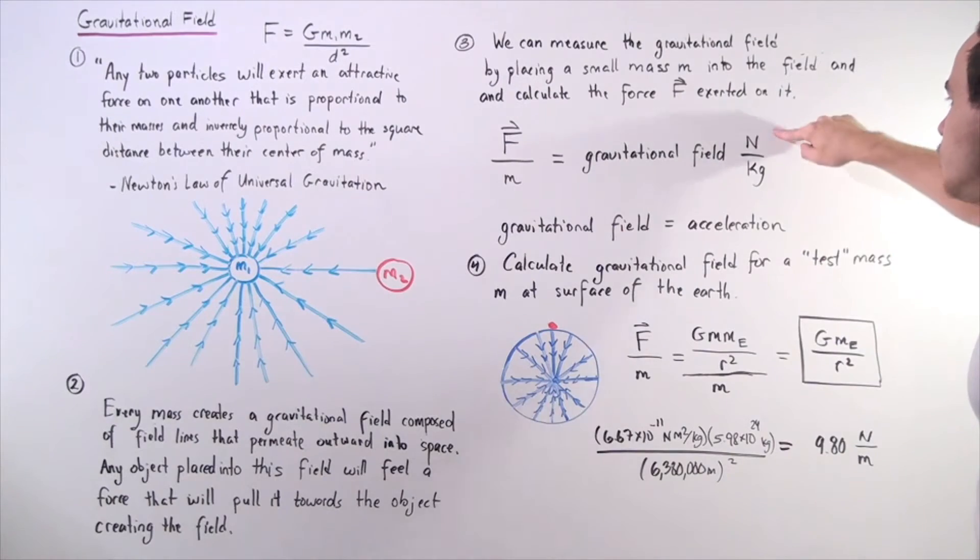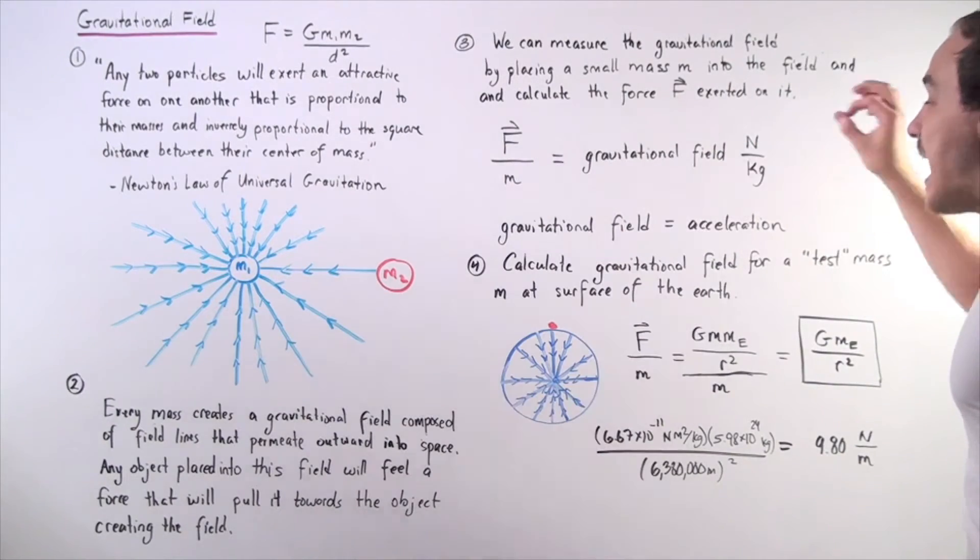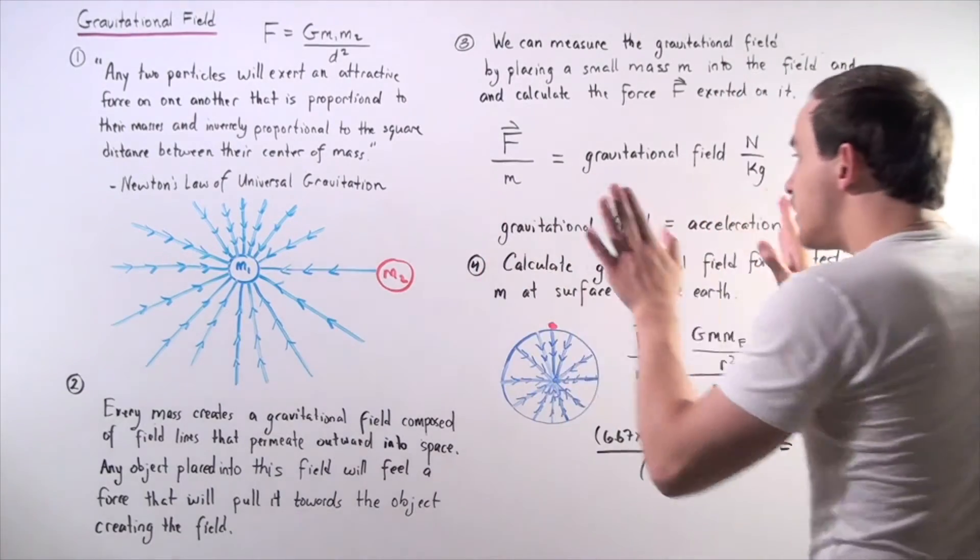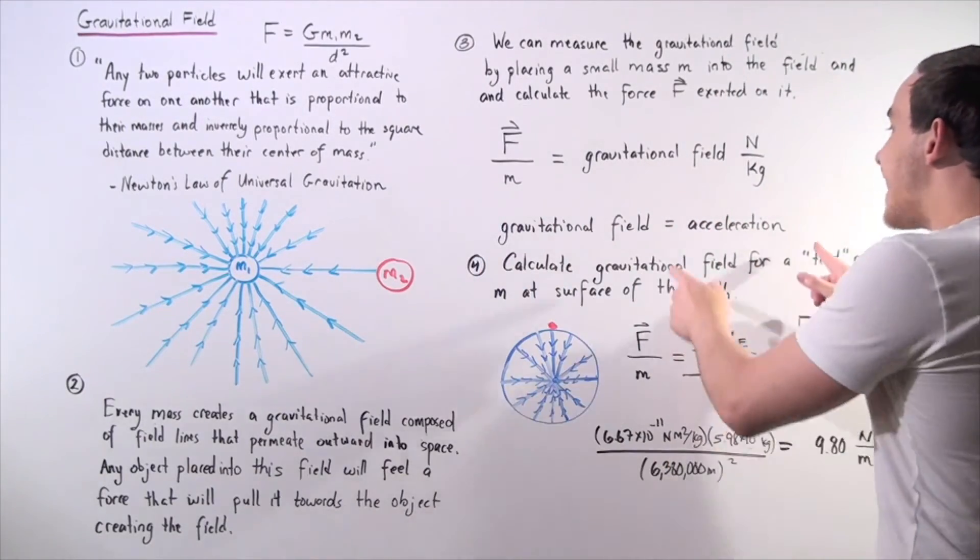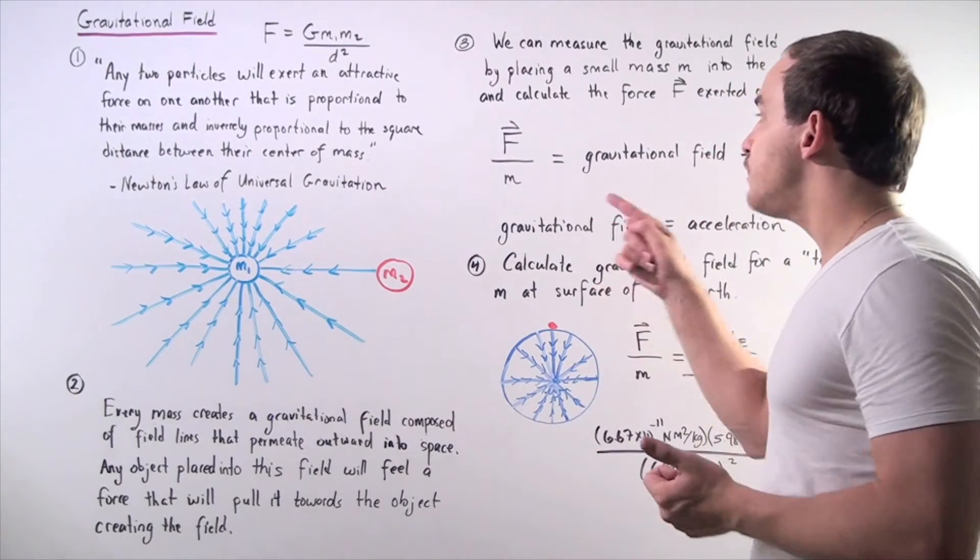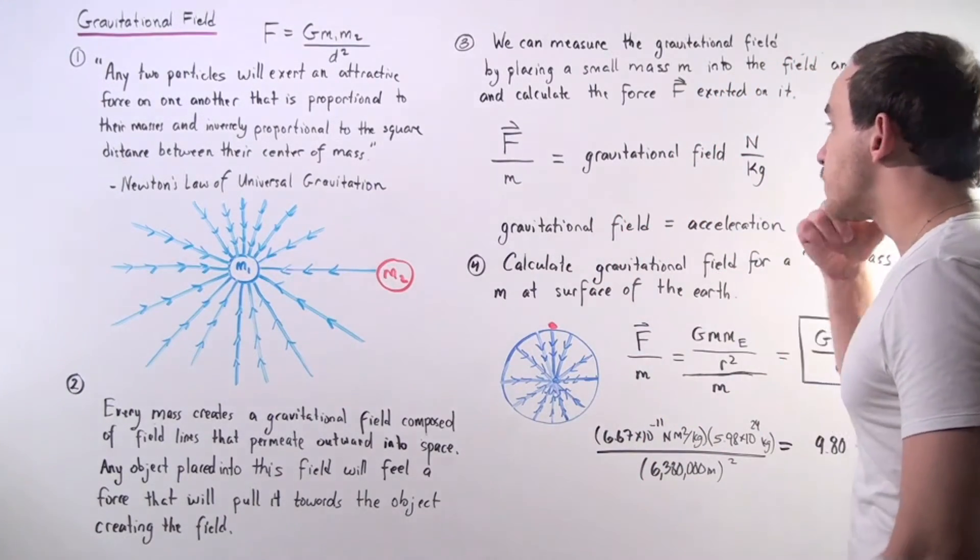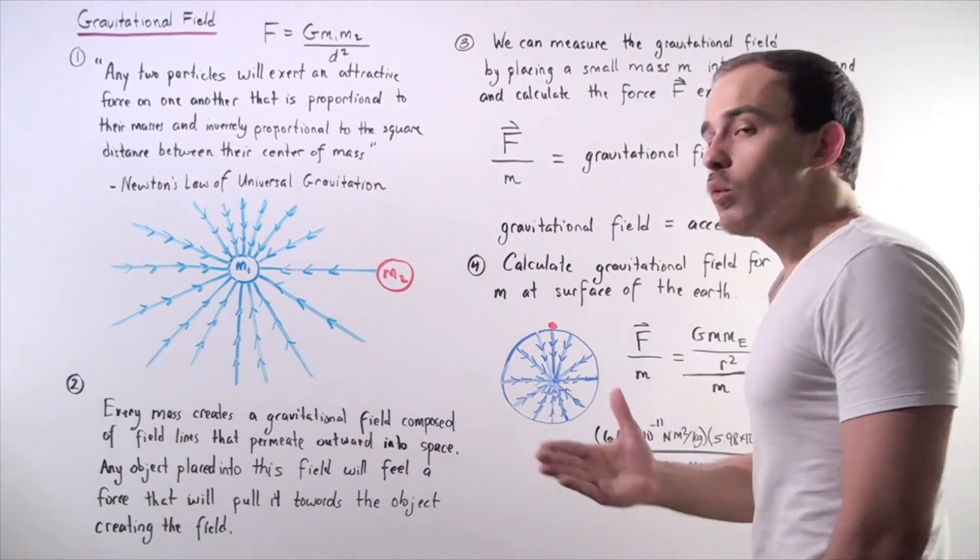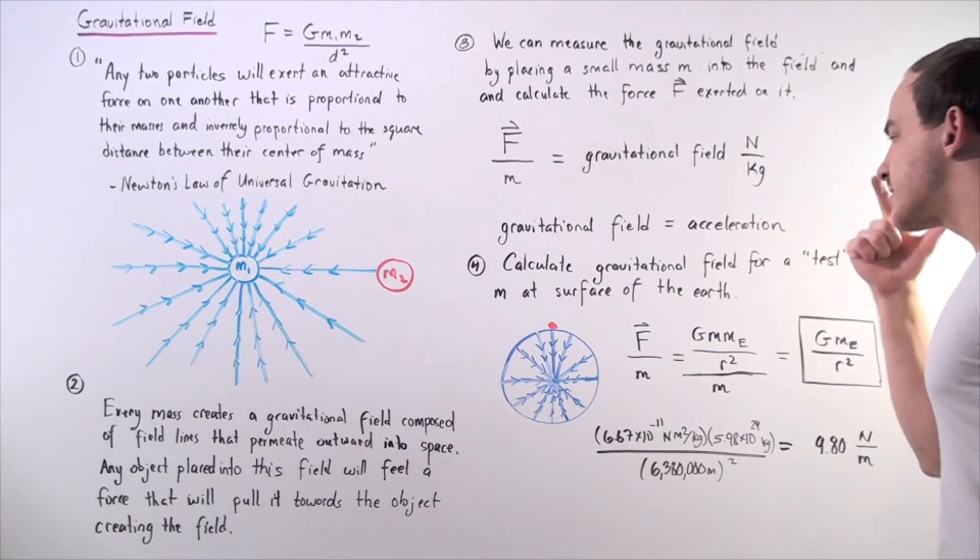So, the units are Newton per kilogram. Now, notice, the gravitational field is actually the same exact thing as acceleration. And we know this from Newton's second law of motion, F equals M times A. So F divided by M is the gravitational field, which is equal to the acceleration.